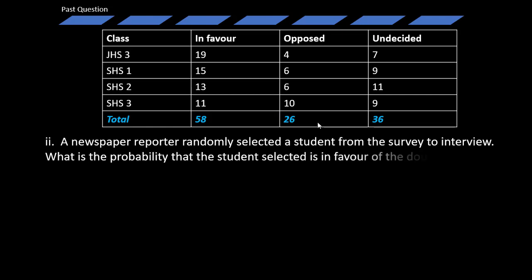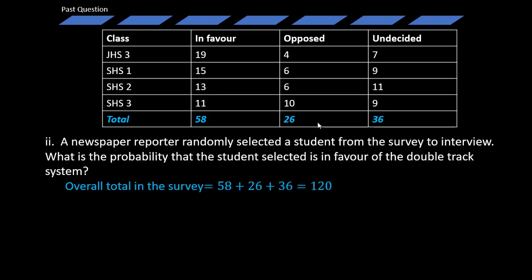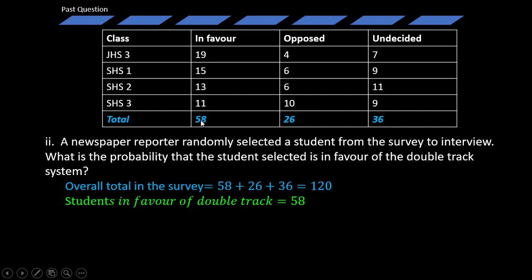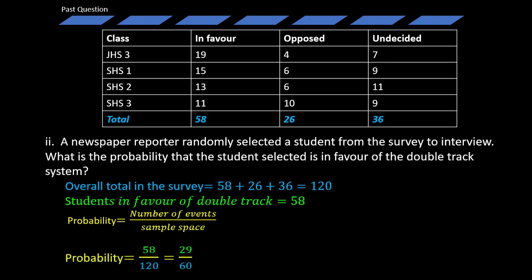What is the probability that the student selected is in favour of the double track system? The overall total in the survey is 120, as we previously calculated. The students in favour of the double track system is 58. Probability is equal to the number of events over the sample space. Here the event is the number of students in favour, and the sample space is the total number of students in the survey.